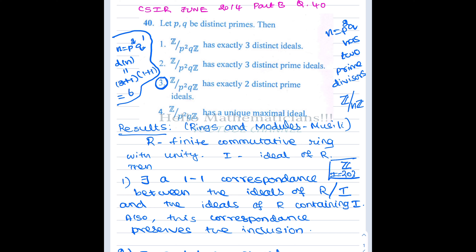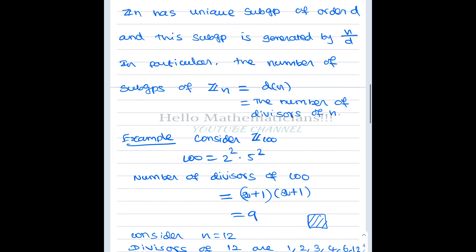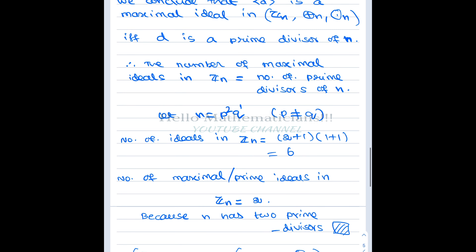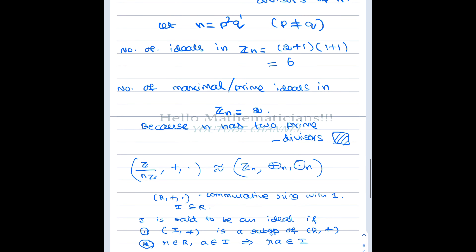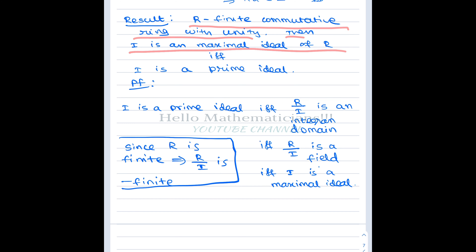In a finite ring, every prime ideal is also a maximal ideal. So what we conclude is: an ideal is prime if and only if it is maximal. Counting prime ideals is the same as counting maximal ideals. Let's see why, in a finite ring, an ideal is prime if and only if maximal. Let R be a finite commutative ring with unity.